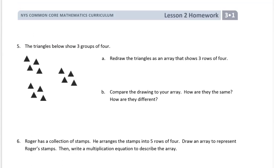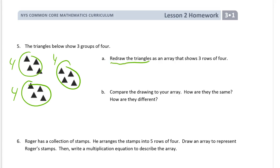The three triangles below show three groups of four. Here's a group of four, here's a group of four, and here's a group of four. Redraw the triangles as an array that shows three rows of four. So we want three rows of four. A lot of times it's easier — if you just draw the first row, then the rest of them are the same. Just think of one row of four first; it might be easier than three rows of four.